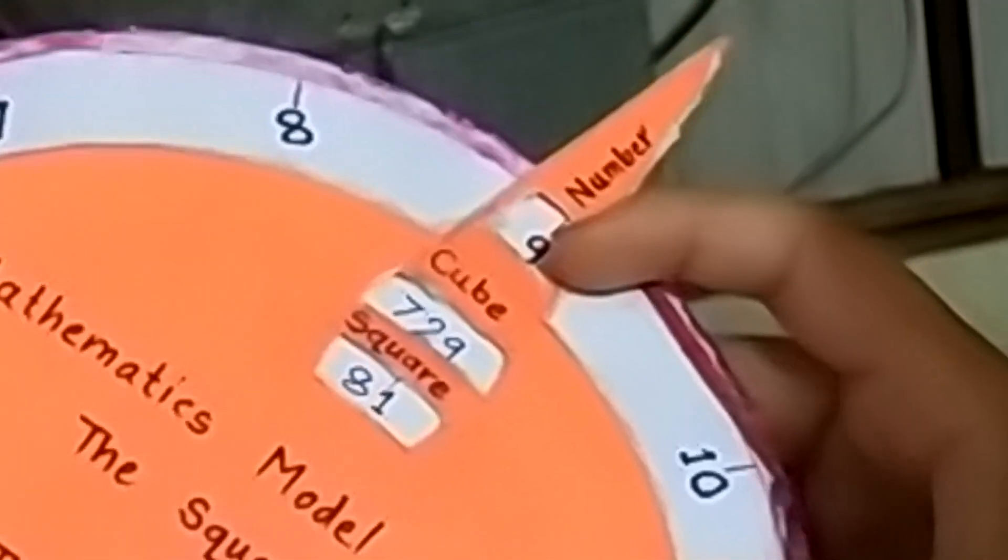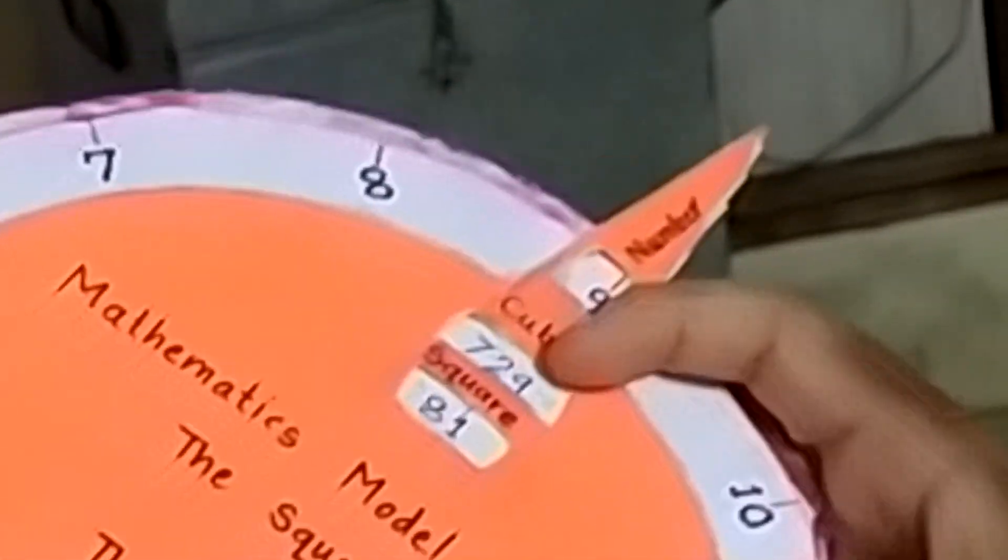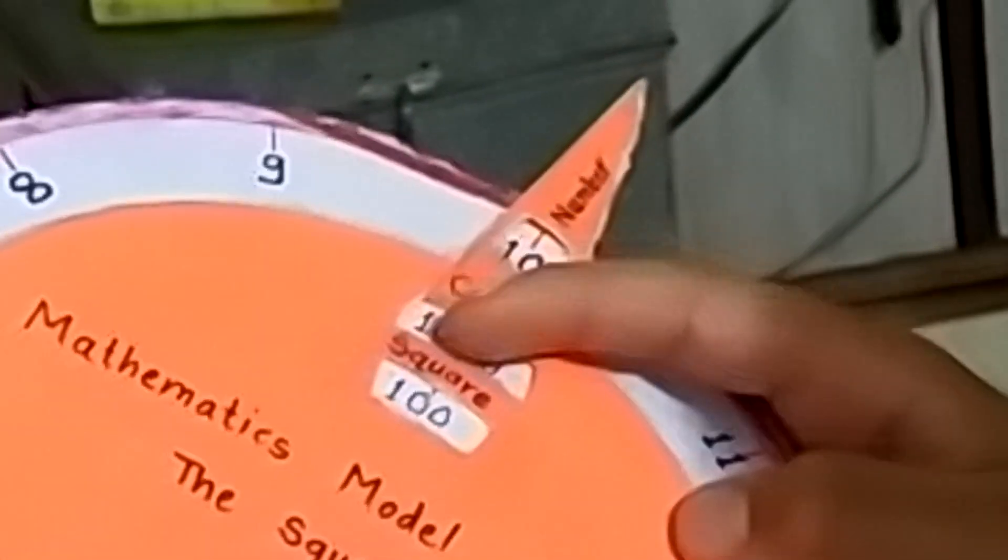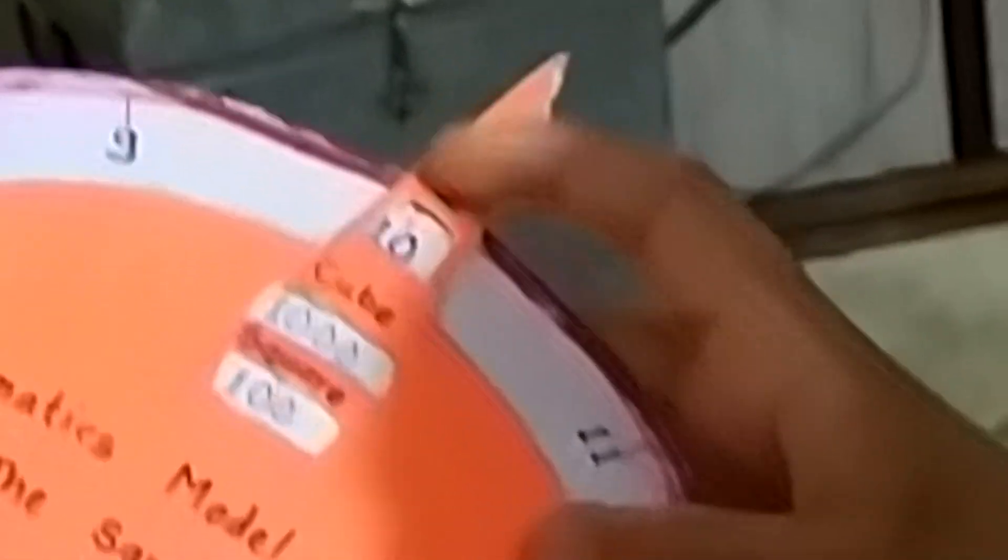9th square is 81 and 9th cube is 729. 10th square is 100 and 10th cube is 1000.